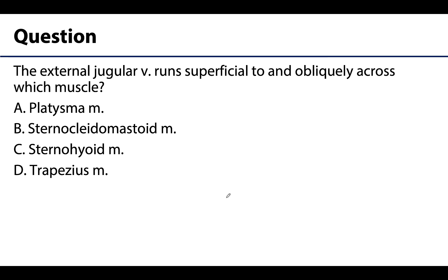The correct answer for this one is B — the good ol' SCM, or sternocleidomastoid muscle. The platysma muscle is typically superficial to the superficial veins. The sternohyoid would make more sense with the anterior jugular vein, as that anterior jugular is typically superficial to the sternohyoid. And it isn't the trapezius, as this is much more posteriorly placed. So the correct answer is sternocleidomastoid.